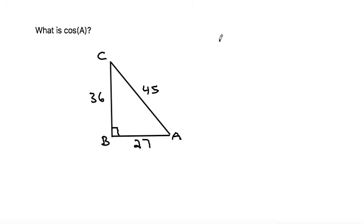First of all, we need to remember that the ratio of cosine, cosine of an angle, is equal to the adjacent side divided by the hypotenuse.